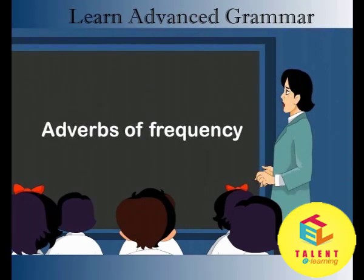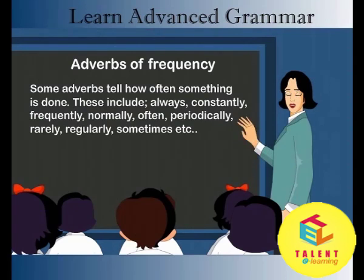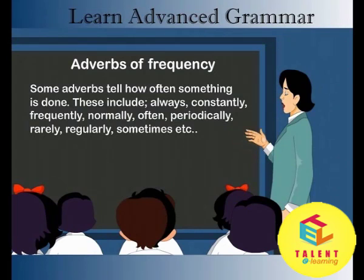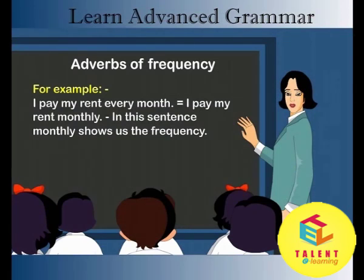Adverbs of frequency. Some adverbs tell how often something is done. These include always, constantly, frequently, normally, often, periodically, rarely, regularly, sometimes, etc. For example: I pay my rent every month / I pay my rent monthly. In this sentence, monthly shows us the frequency.